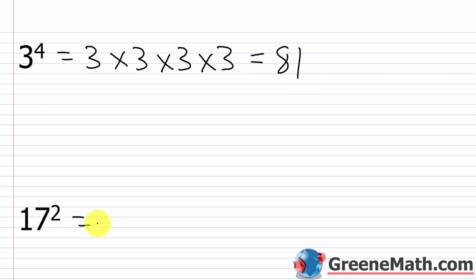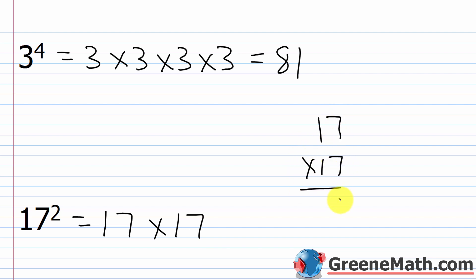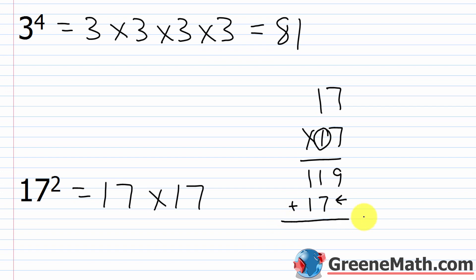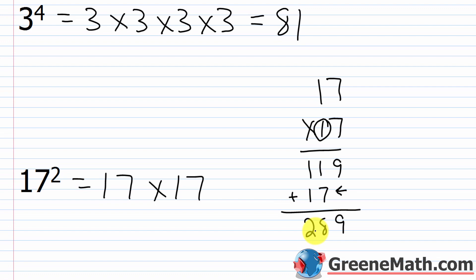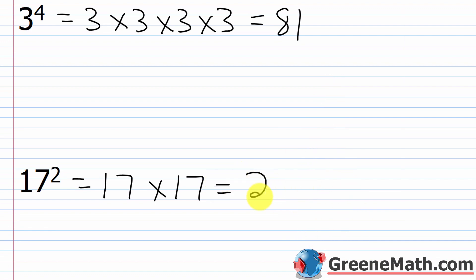What about 17 squared, or 17 to the power of 2? This is 17 times 17. I don't know this off the top of my head, so let's do vertical multiplication on screen. 7×7=49, 7×1=7, plus 4 is 11. Then multiplying 1 times 17, I shift over and write 17. Adding: bring down the 9, 1+7=8, 1+1=2. We end up with 289. So 17 squared equals 289.